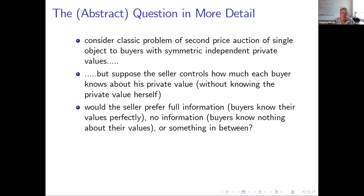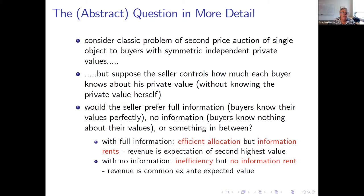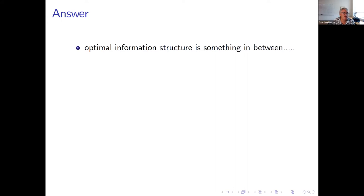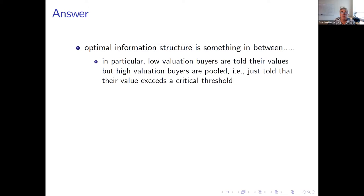We've already described the trade-off, so the answer is something in between. The particular thing in between that is optimal for the seller is that you let low valuation buyers know their values — they can be fully informed — but high valuation buyers are going to be pooled. In particular, if one individual's value is above a critical threshold, he's told that it's above that threshold, but he is told nothing else. That's the answer.